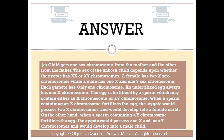The egg is fertilized by a sperm which may contain either an X chromosome or a Y chromosome. When a sperm containing an X chromosome fertilizes the egg, the zygote would possess two X chromosomes and would develop into a female child. On the other hand, when a sperm containing a Y chromosome fertilizes the egg, the zygote would possess one X and one Y chromosome and would develop into a male child.